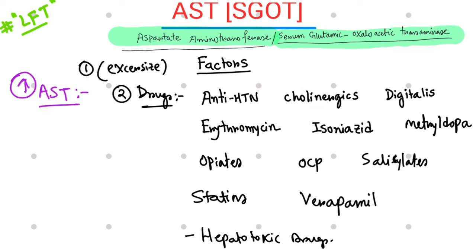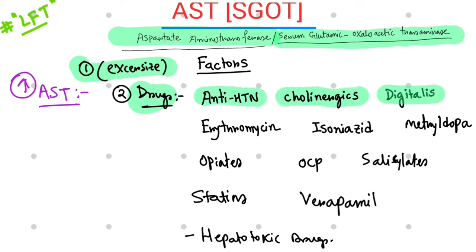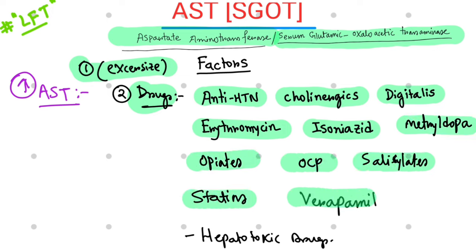Factors that can lead to increased AST levels include exercise and certain drugs such as antihypertensive drugs, cholinergics, digitalis, erythromycin, isoniazid, methyldopa, opiates, oral contraceptive pills, salicylates, statins, and verapamil. These are commonly used drugs, and any other hepatotoxic drug can also cause increased levels of AST.